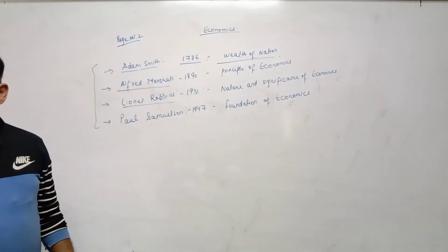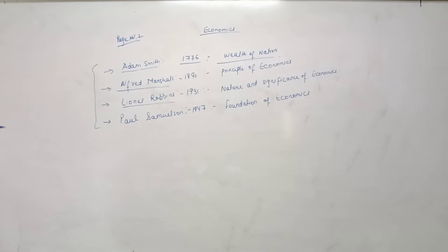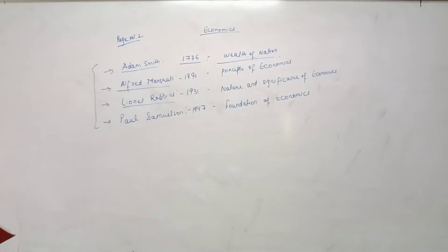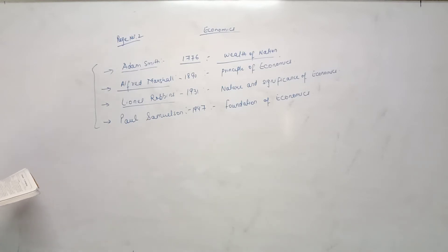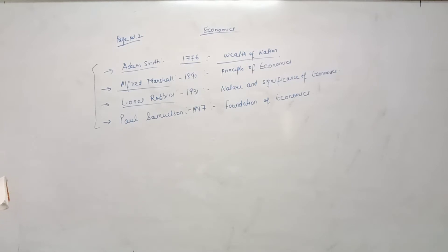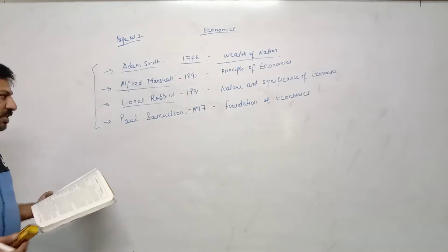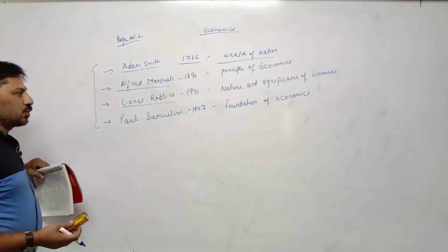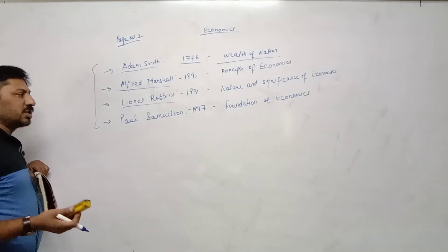On page number one there are only two questions: one about the Sanskrit meaning of economics, and another about from which Greek word the English word economics is derived — the Greek word Oikonomos, which has two words: Oiko meaning household and Nomos meaning management, so economics means management of household.